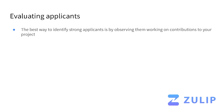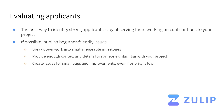During the GSoC application period, the best way to identify strong applicants is really by observing them working on contributions to the project. For that to be possible, you need some issues that are sufficiently beginner-friendly so folks can jump in and get started. Patterns we've found work well include breaking down work into small mergeable milestones, providing enough context in the issue description for someone unfamiliar with the project, and creating issues for any small bugs or improvements that come up — even if not high priority — just filing them away as a great way for someone to get started.